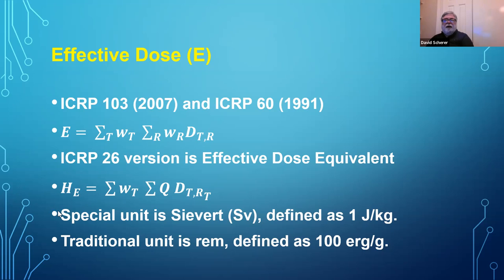This is all done typically with computers. We take the effective doses to each tissue and multiply by a weighting factor for each tissue. Those that are more radiosensitive have a higher weighting factor; those that are more radio-resistant have a lower weighting factor. Then we add that up for the whole body, and that gives us the effective dose.